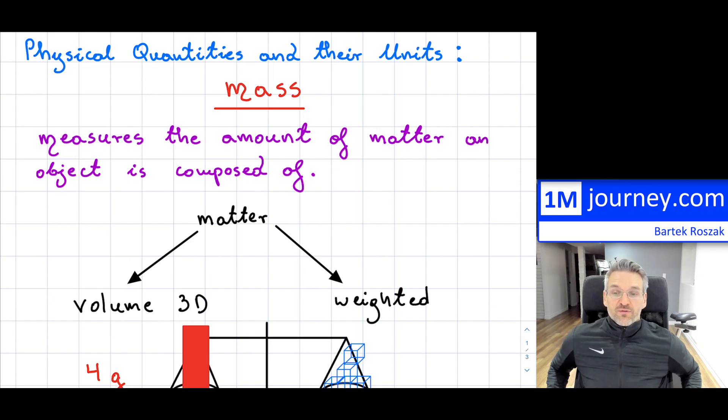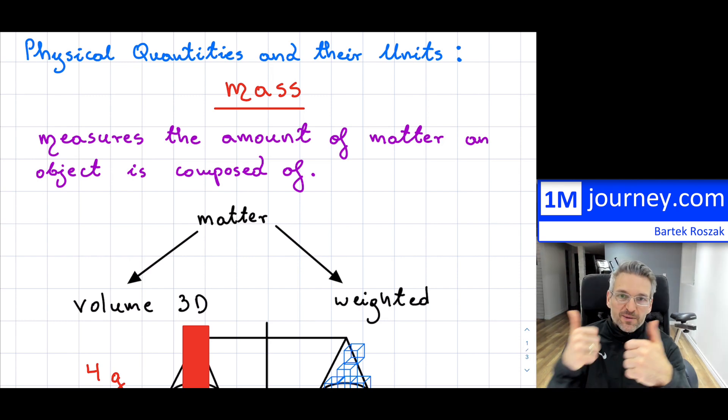of how you could measure mass, and what it kind of relates back to, which is really the amount of matter, and matter occupies space, so in other words, it takes up a volume, which is three-dimensional, and it can be weighed. So thanks for watching, and we'll see you in future videos, bye everybody, cheers.